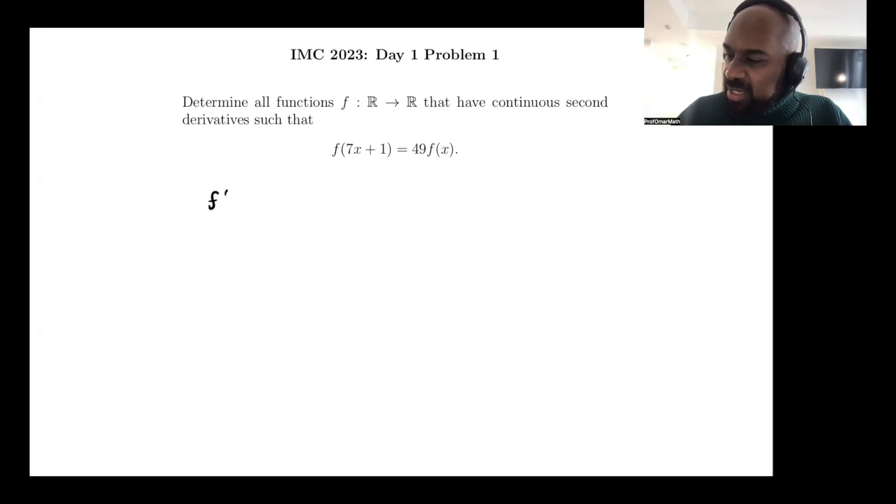So differentiating, we get f' at 7x plus 1, and then times 7 by the chain rule equals 49f' of x. Now differentiating again, we'll have a 7 come out of this by the chain rule again, and we'll get 49f'' of 7x plus 1 equals 49f'' of x.